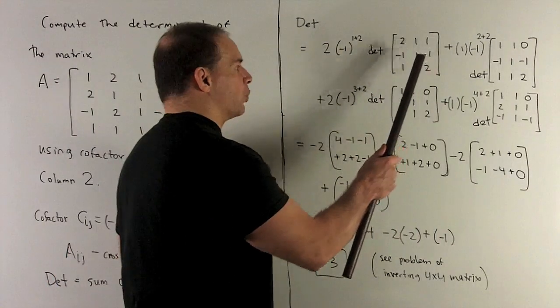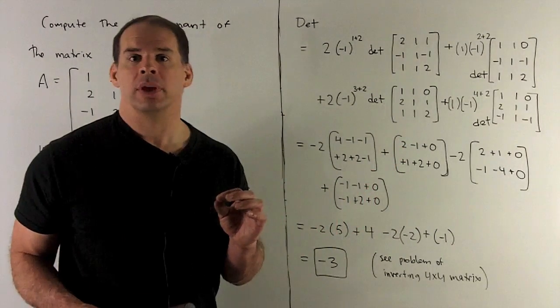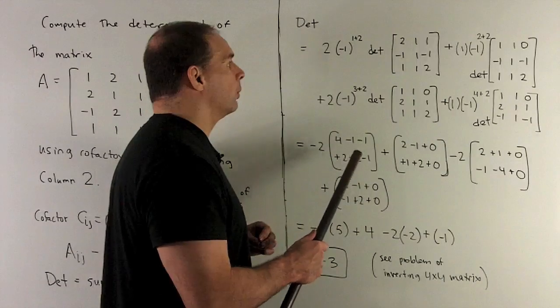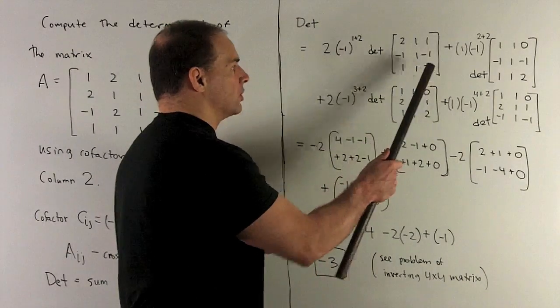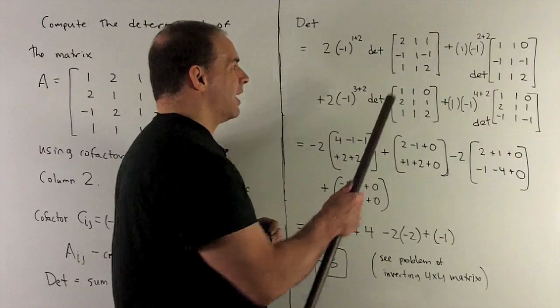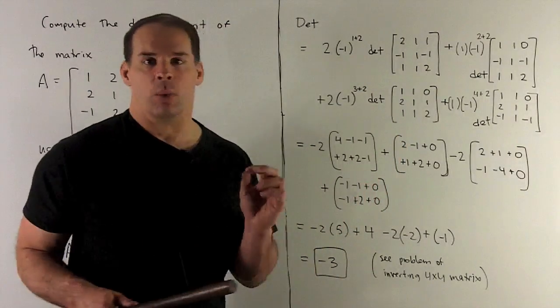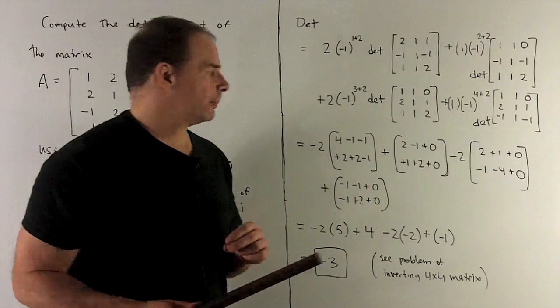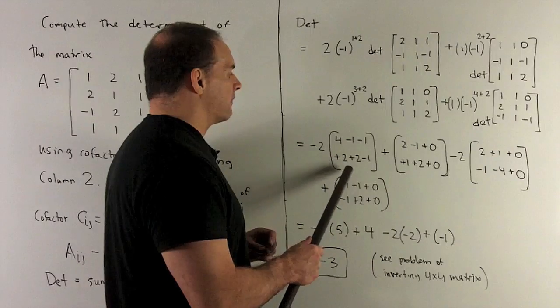So, I'll have 2 minus 1, 1 gives me minus 2. We're subtracting, so it becomes a plus 2. 1 minus 1, 2, 1 minus 1, 2, another minus 2, which turns into a plus 2. And then, 1, 1, 1 gives me a 1, which becomes a minus 1. So, that gives me my first minor.